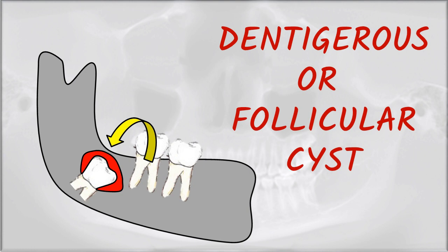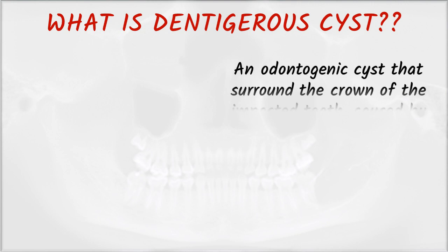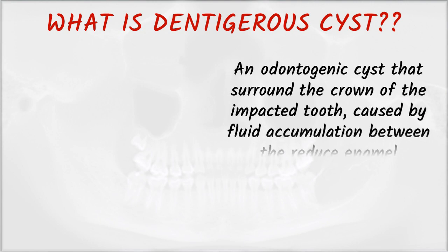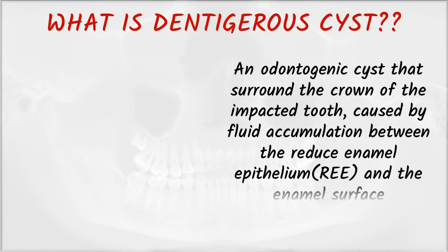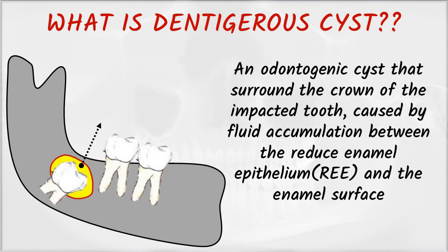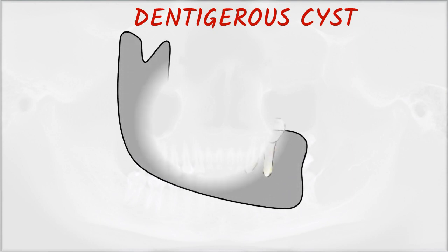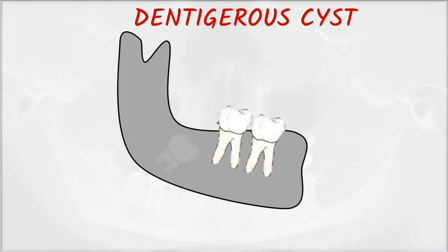What is a dentigerous cyst? It is an odontogenic cyst that surrounds the crown of an impacted tooth, caused by fluid accumulation between the reduced enamel epithelium and the enamel surface. Look at the figure — this is an impacted third molar which is surrounded by a cyst.